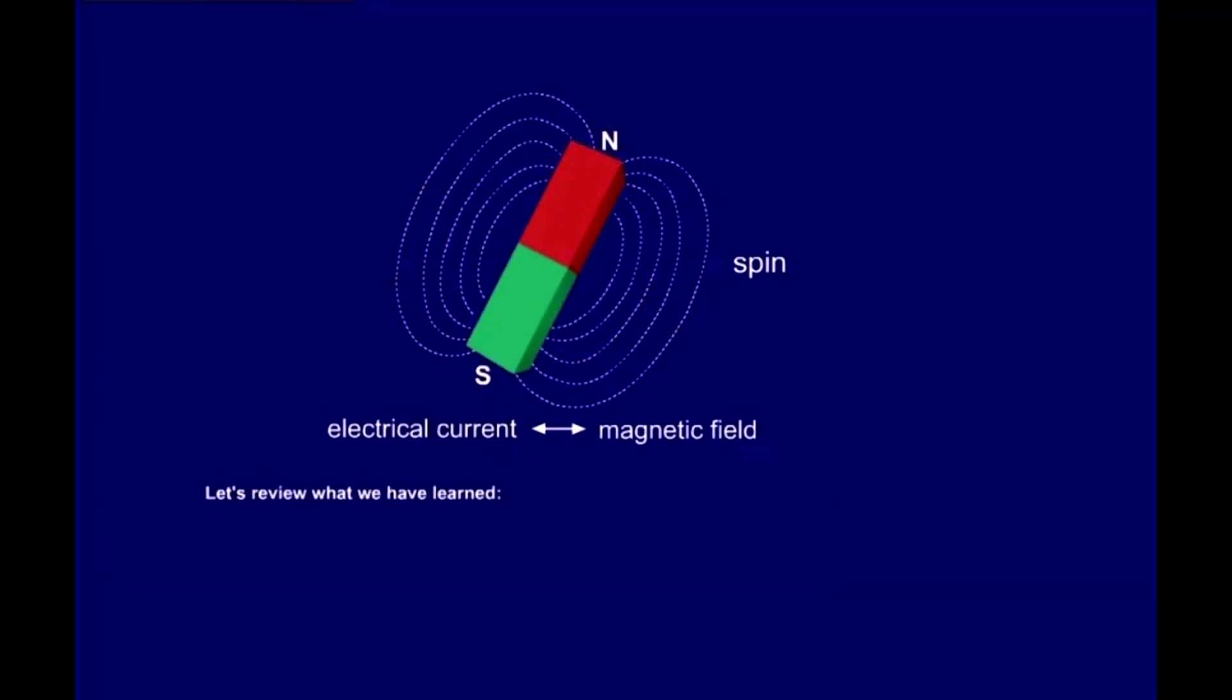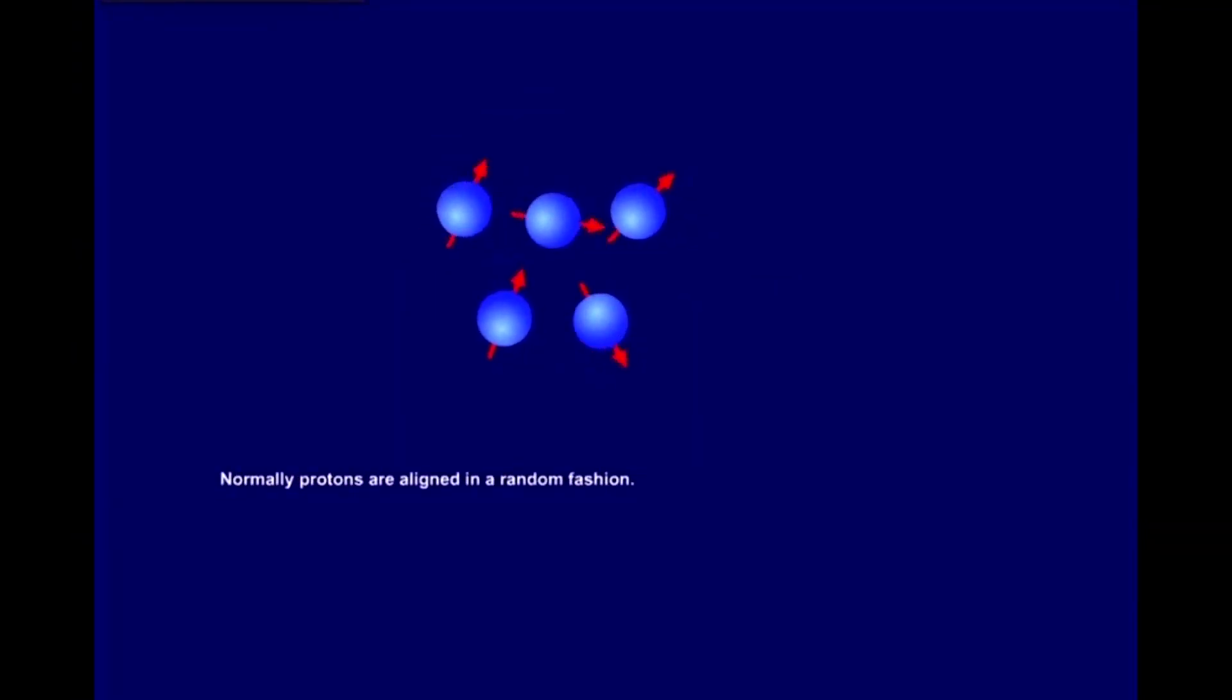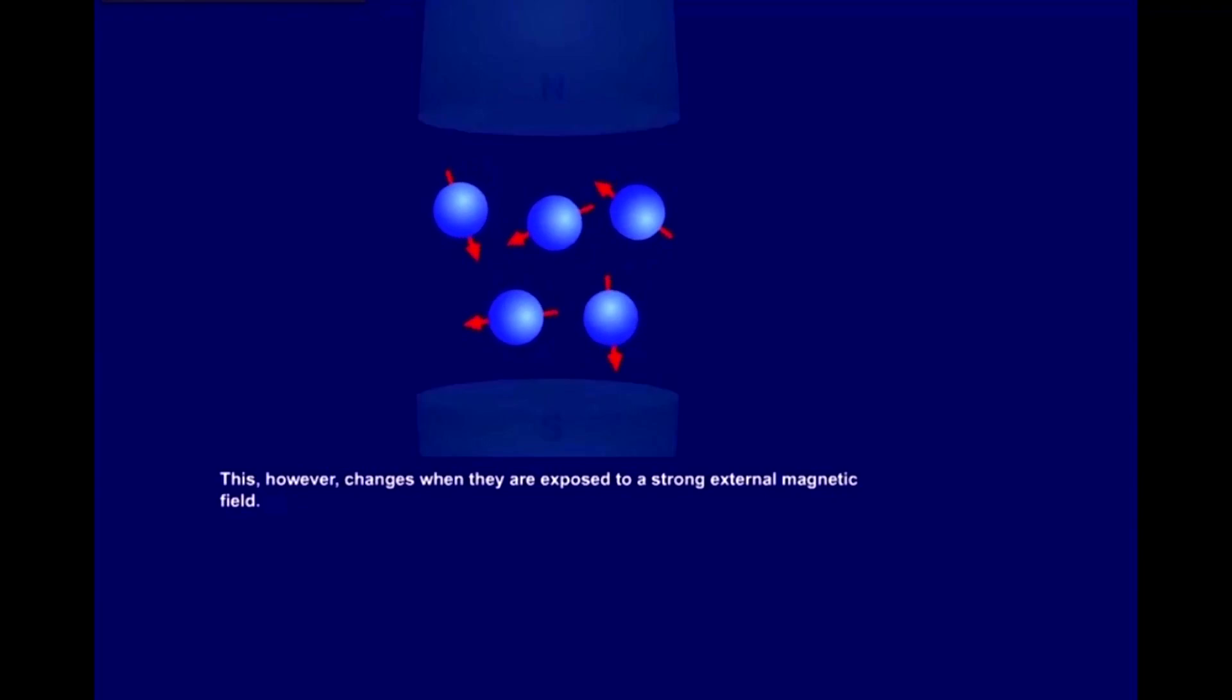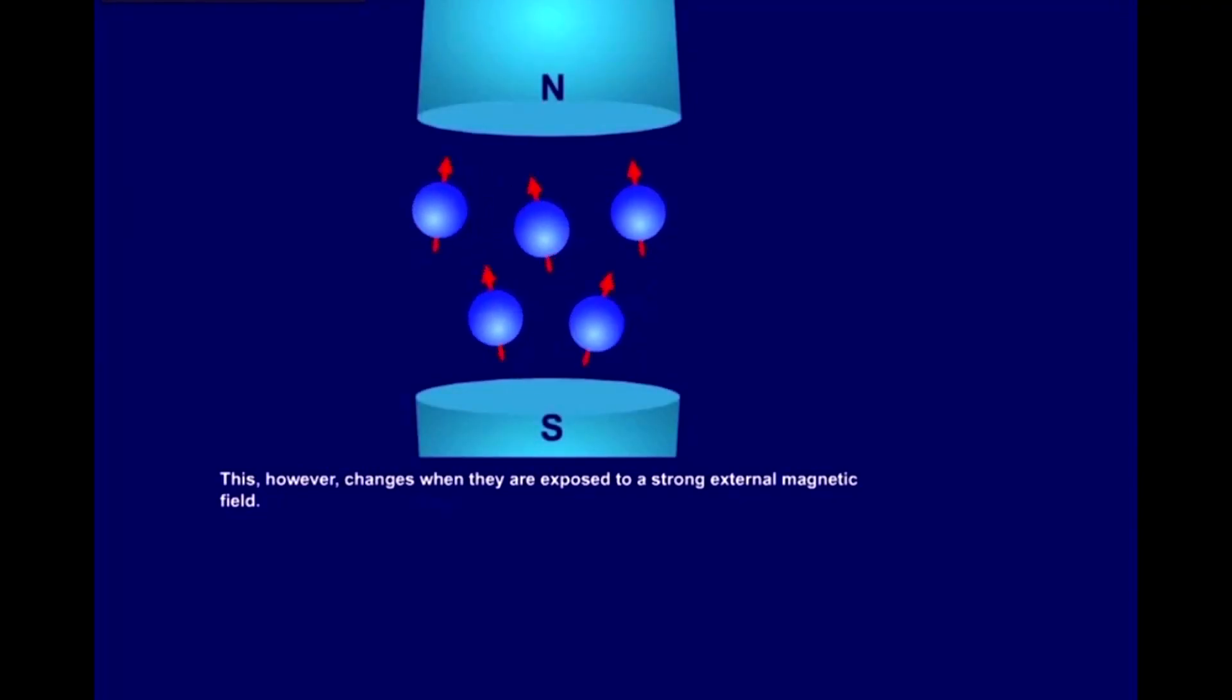Let's review what we have learned. Normally, protons are aligned in a random fashion. This, however, changes when they are exposed to a strong external magnetic field. The protons, being little magnets, align themselves in the external magnetic field like a compass needle in the magnetic field of the Earth.